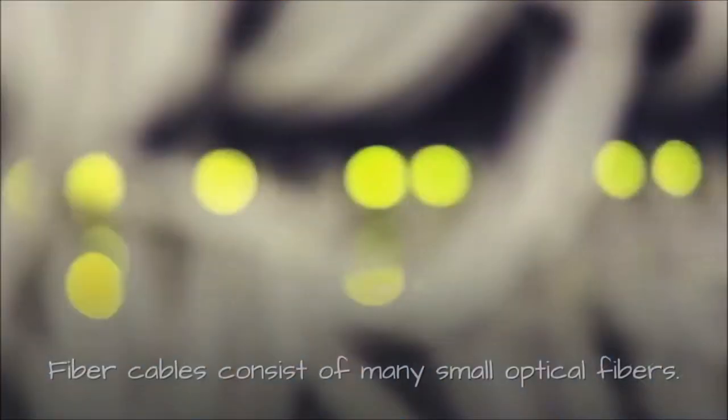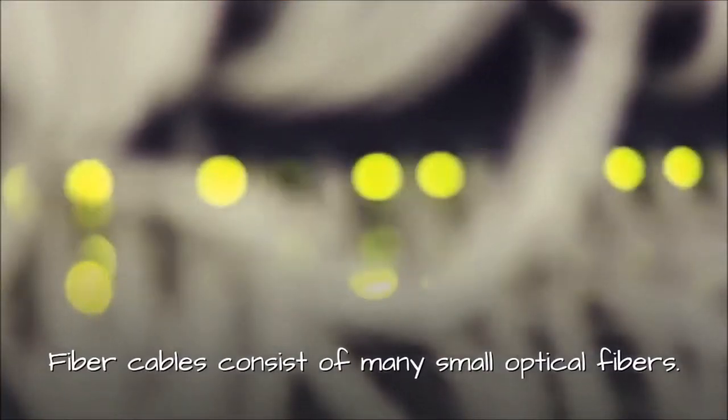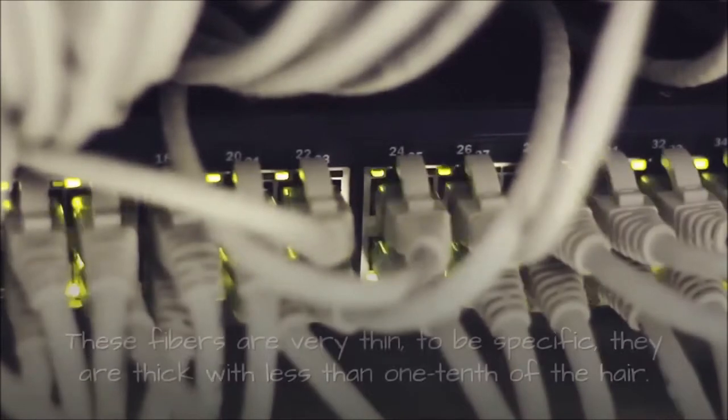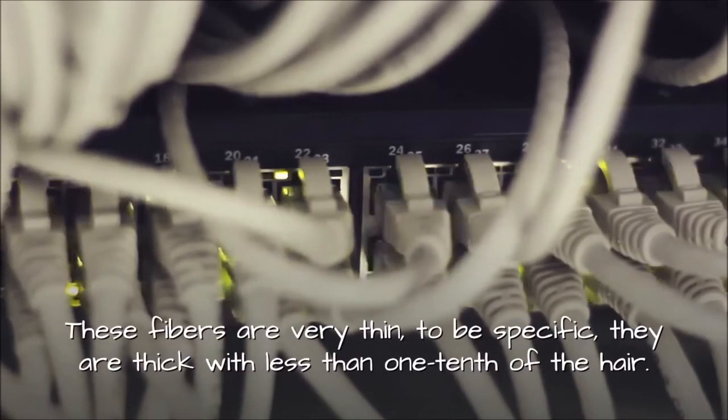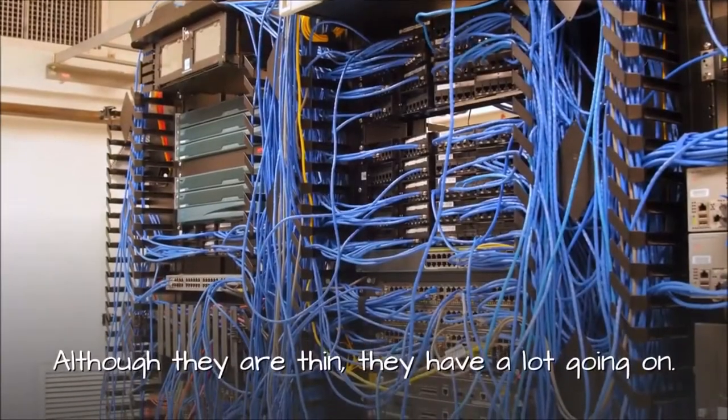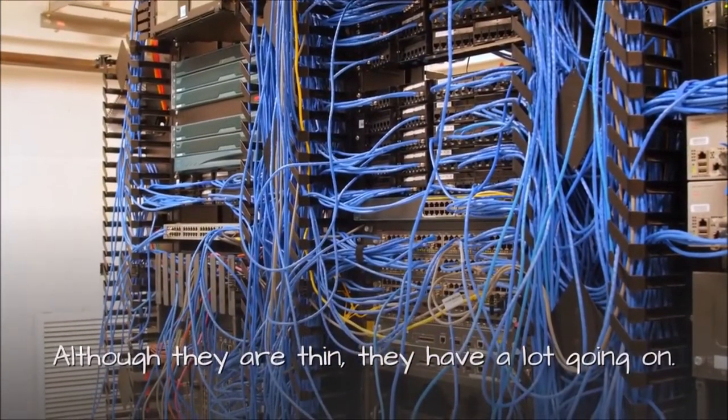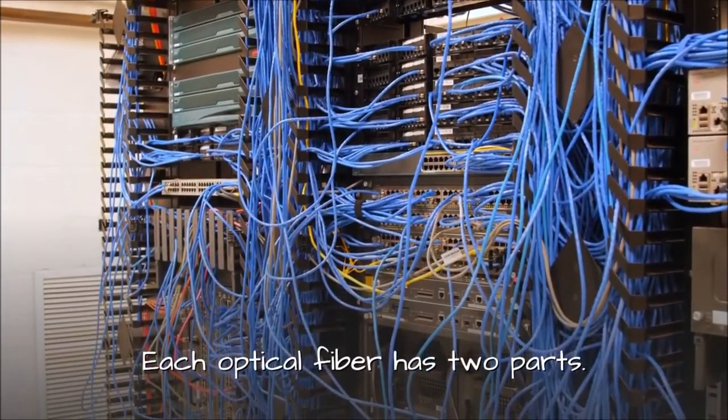Optical fibers: Fiber cables consist of many small optical fibers. These fibers are very thin. To be specific, they are less than one-tenth the thickness of a hair. Although they are thin, they have a lot going on. Each optical fiber has two parts.